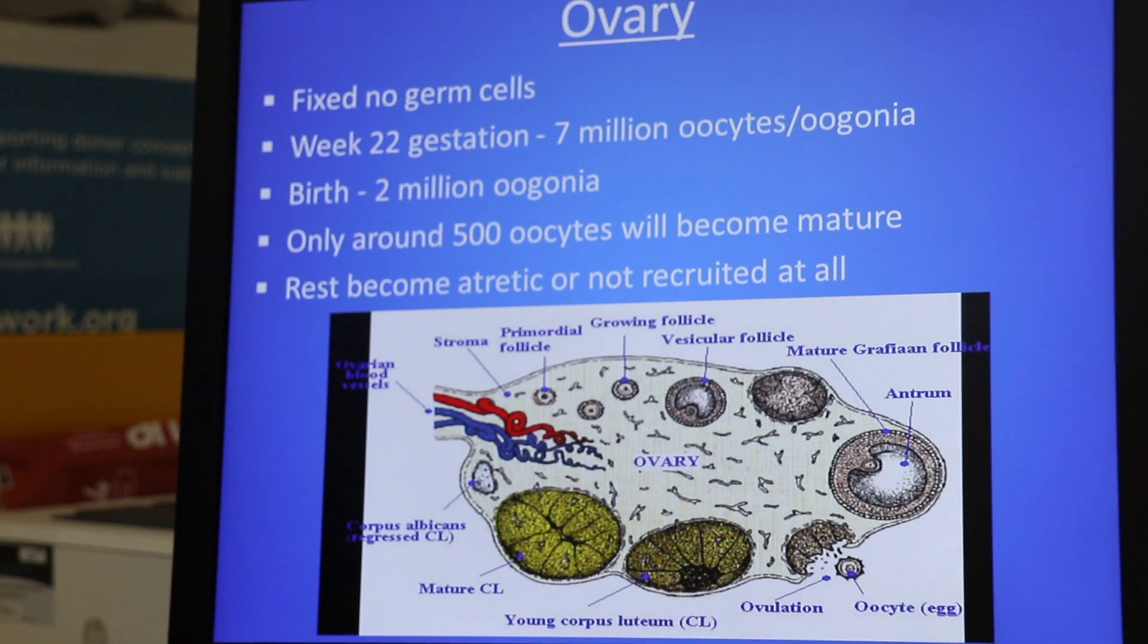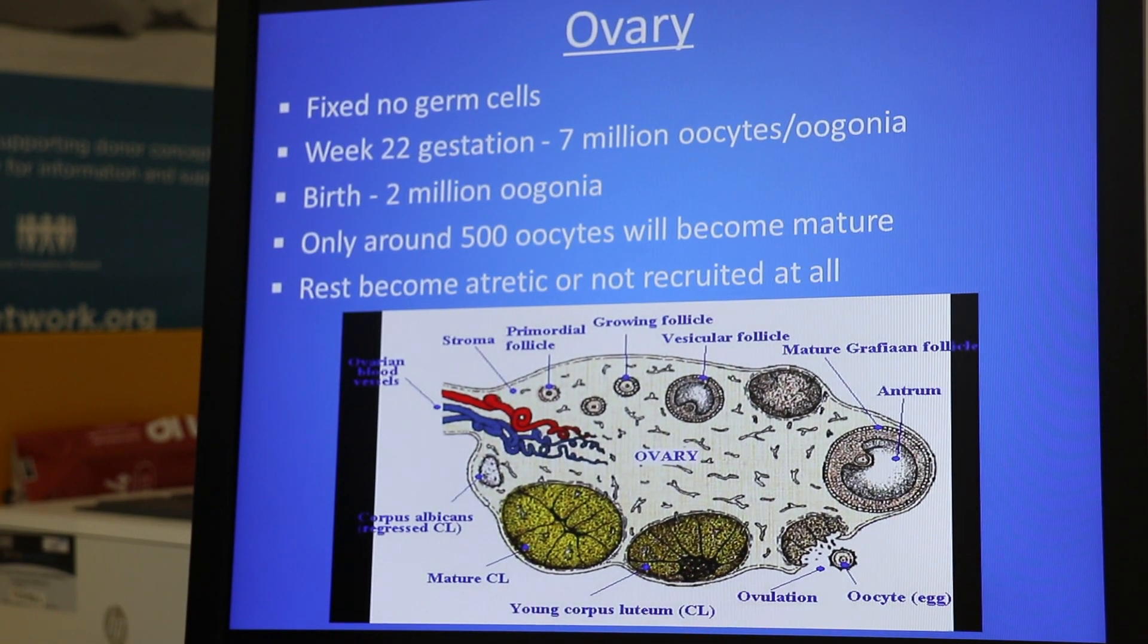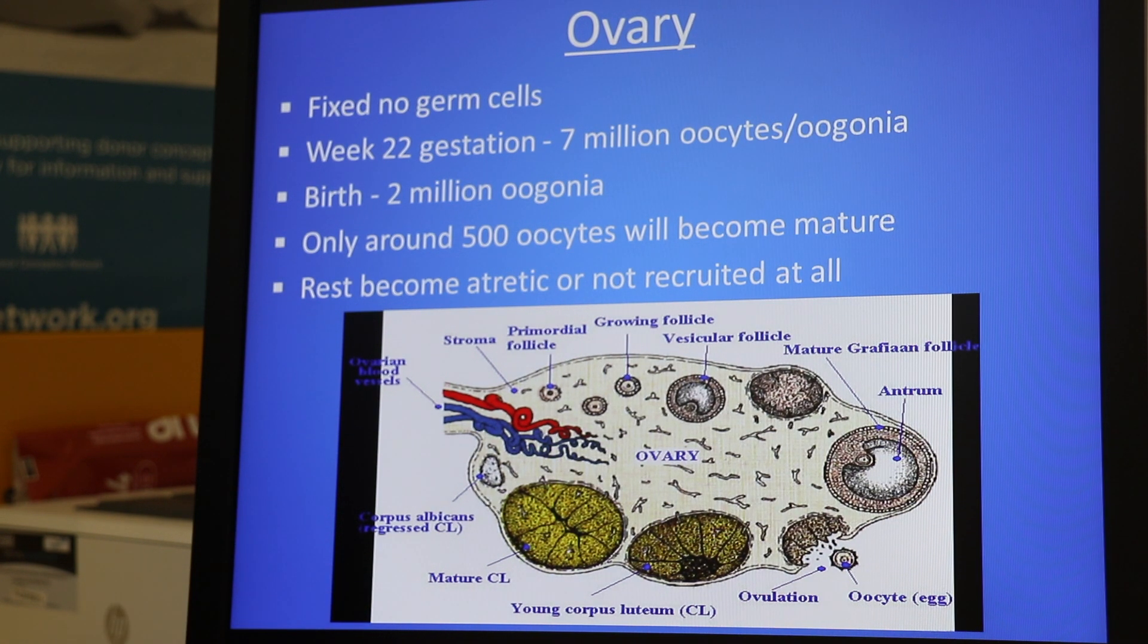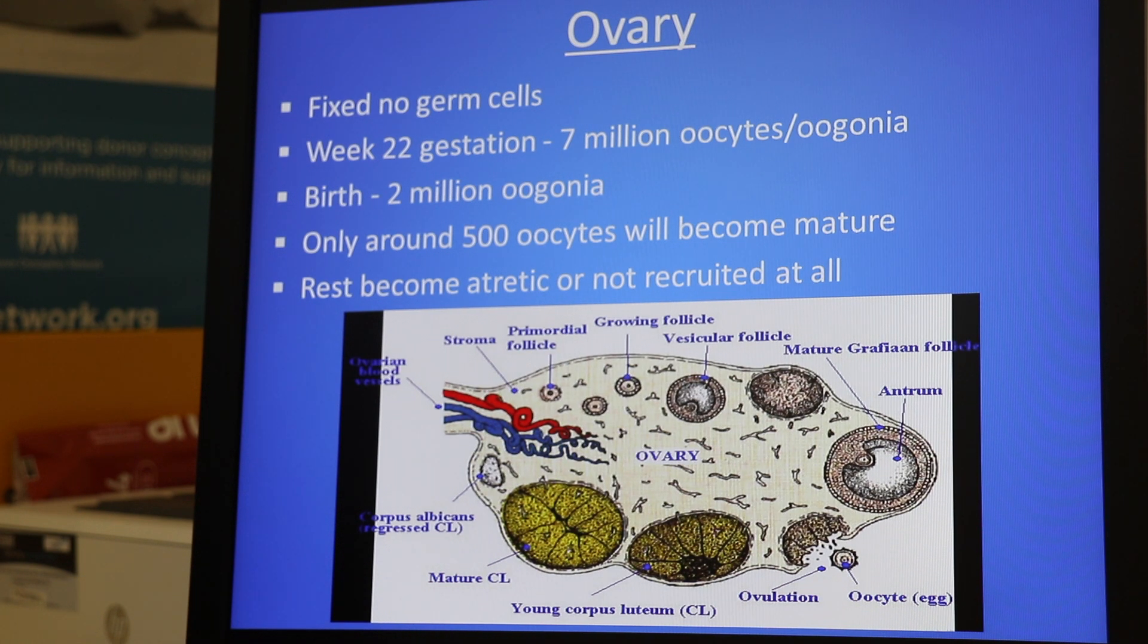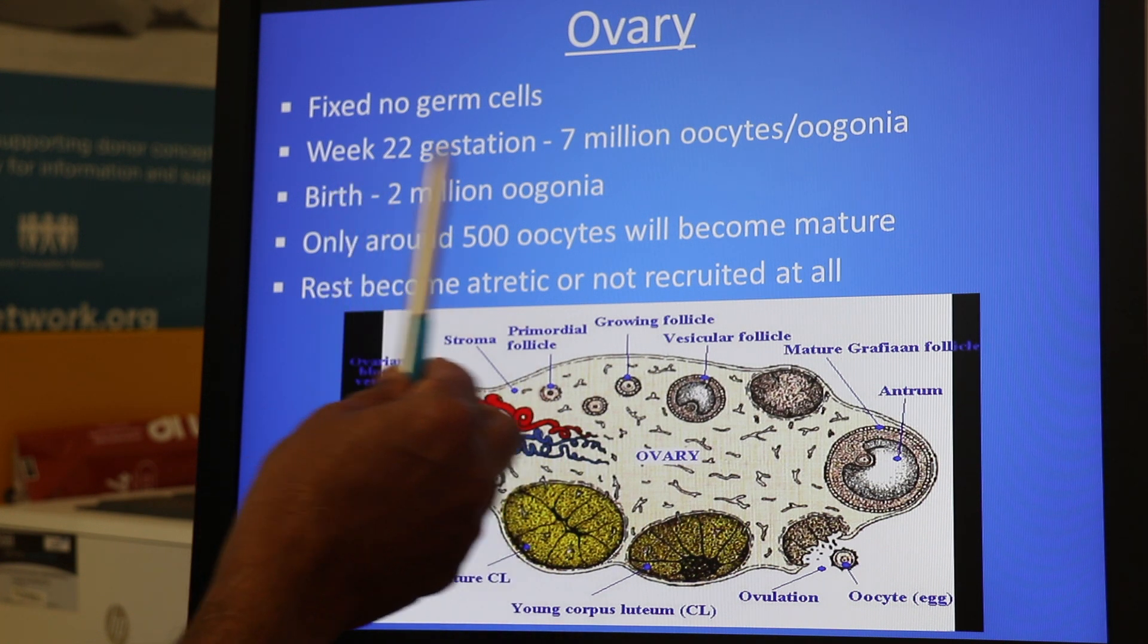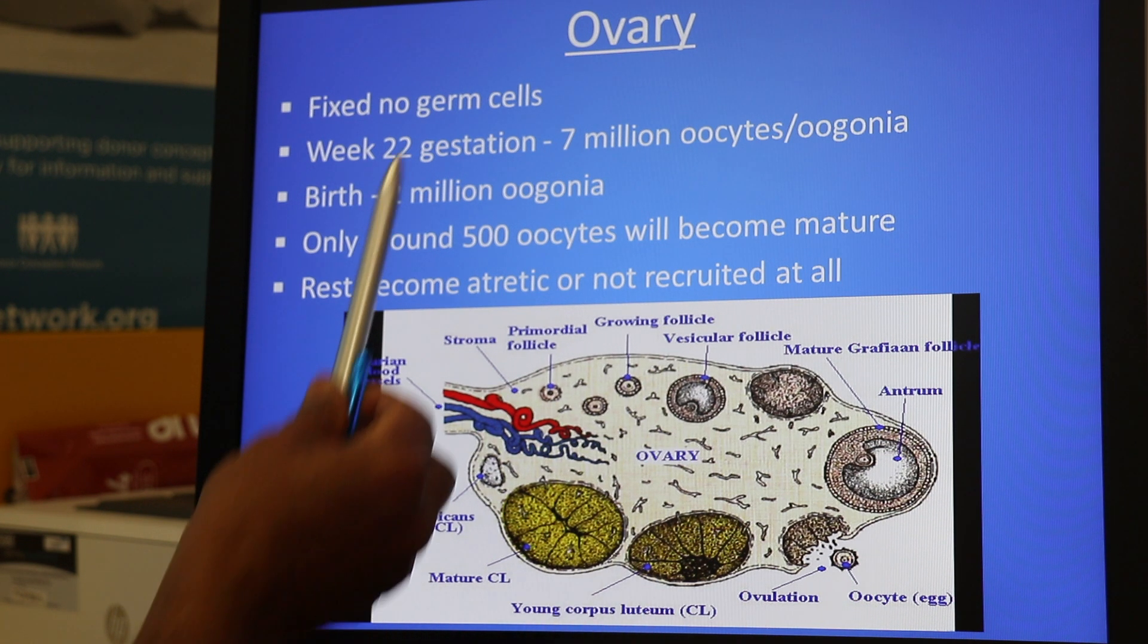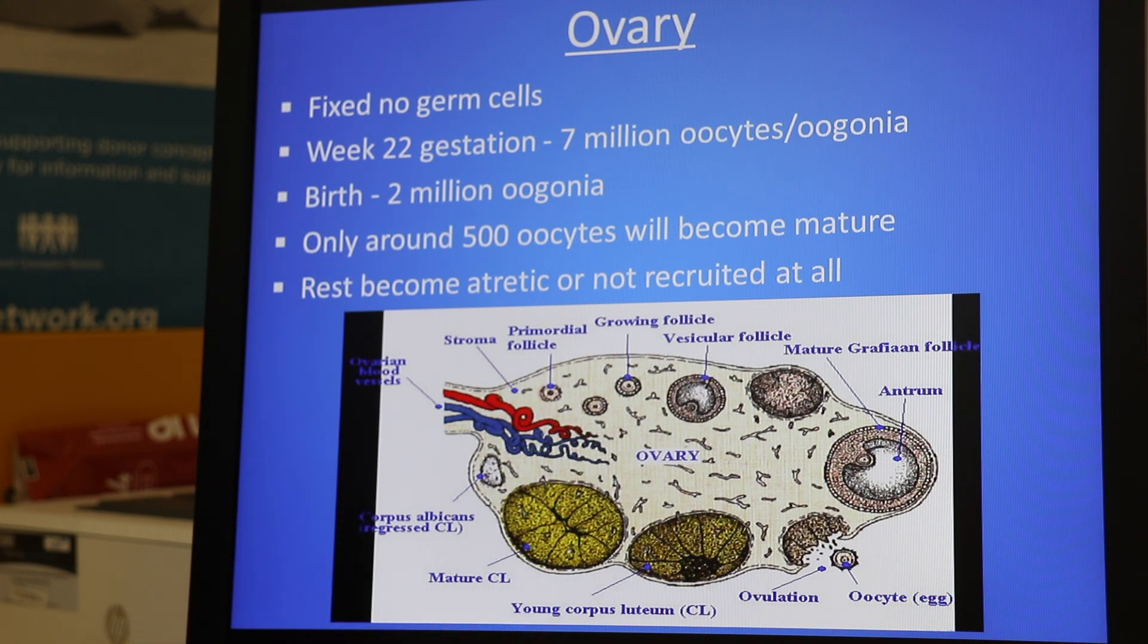We all know that the primordial germ cells migrate from the primitive streak into the gonads, in this case ovary, at the fetal life. And then it multiplies and forms millions of oogonia or germ cells. And in week 22 of gestation, there are about 7-8 million. And then it comes down to 2 million at the time of birth. And again, it comes down to 600 to 700 or 800 thousand at the time of puberty. What happens to the remaining ones? They try to grow and there is no pituitary hormones, so they go to atresia.